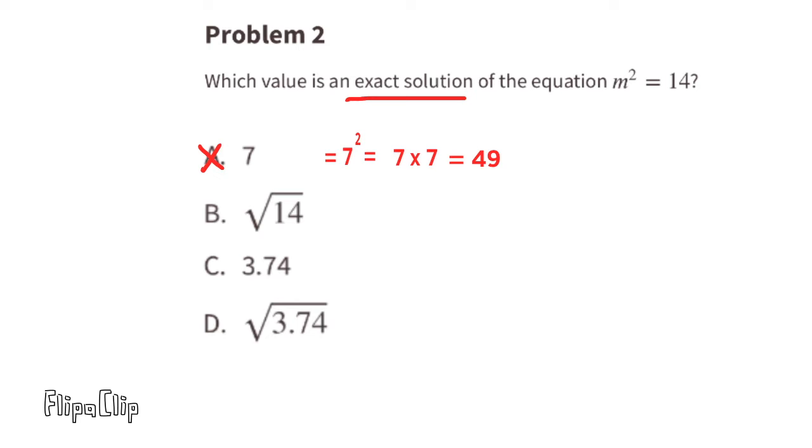Option B: If m were the square root of 14, then m squared would be 14. So the square root of 14 is a solution to m squared equals 14.